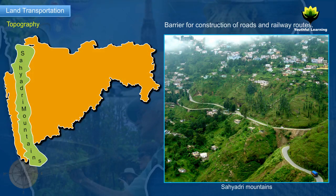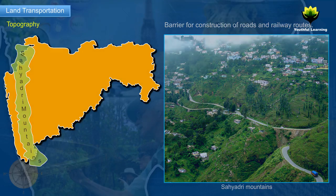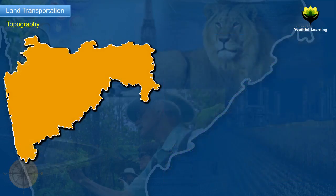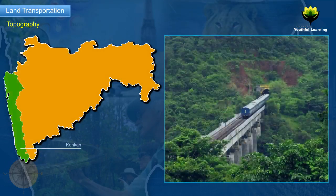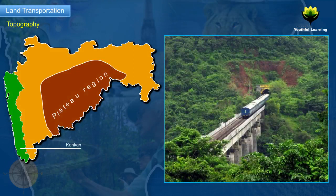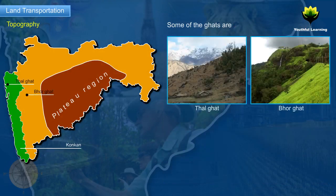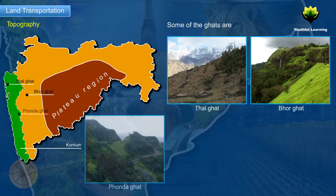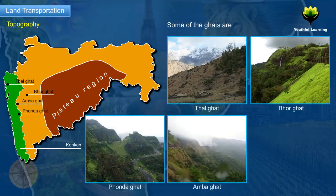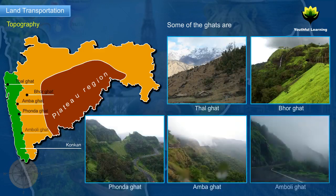For example, only a few Ghats connect the Konkan region with the Plateau region. Some of the Ghats are Thal Ghat, Bhor Ghat, Ponda Ghat, Amba Ghat and Amboly Ghat.